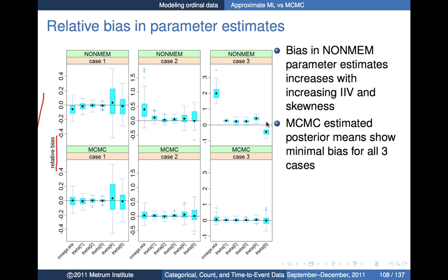Looking at the results: bias is on the y-axis. The top group of panels are NONMEM results; the bottom are BUGS results using MCMC. Case one — small inter-individual variation and roughly equal probabilities for each score at baseline — shows not a whole lot of difference between the two methods; they have roughly equivalent bias performance. Moving to case two with greater skewness, we start to see some indications of bias with NONMEM, albeit at a relatively low level, that are not apparent with MCMC.